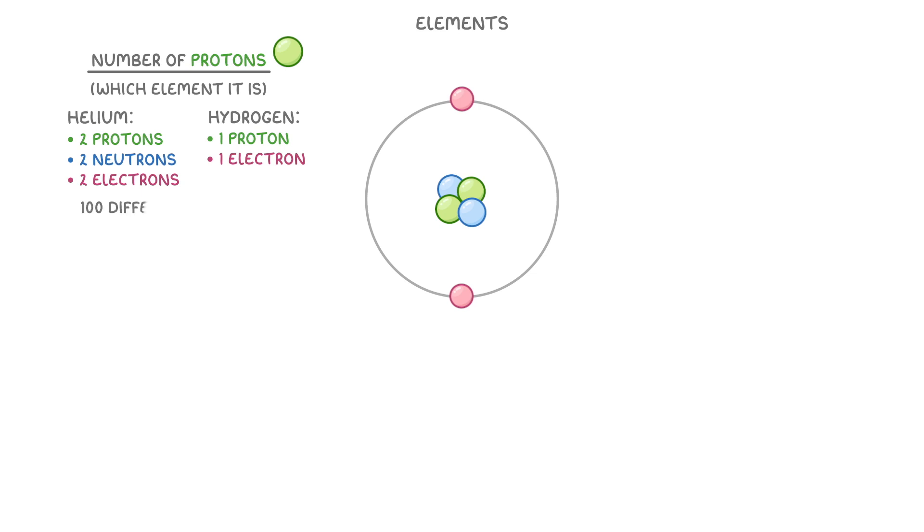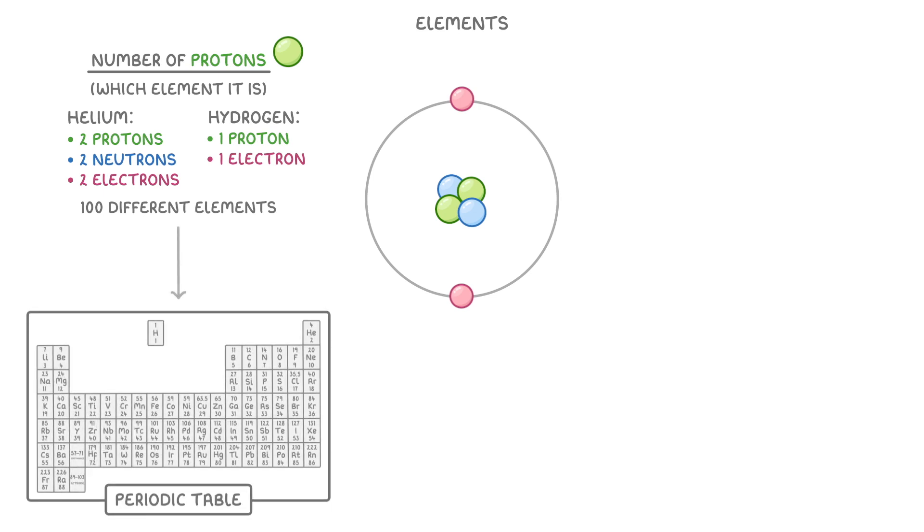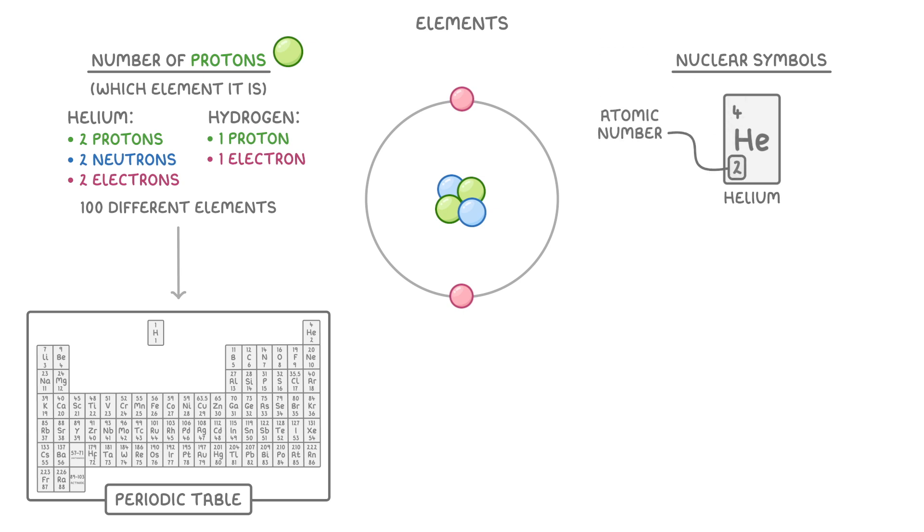In total, there are around 100 different elements, and they've been organized into the periodic table, with each box representing a different element. We call these boxes nuclear symbols, and the number in the bottom left is the atomic number, which is unique to that element, as it represents the number of protons in the atoms of that element.